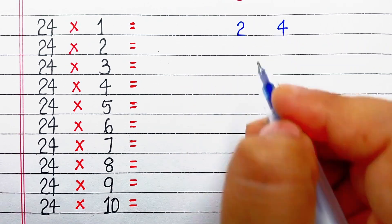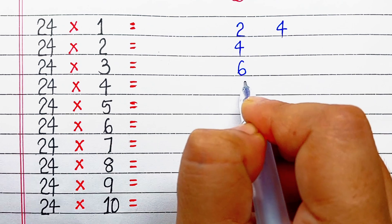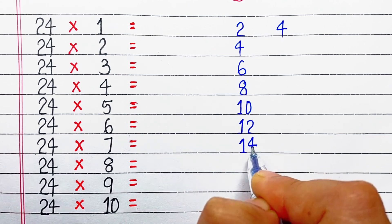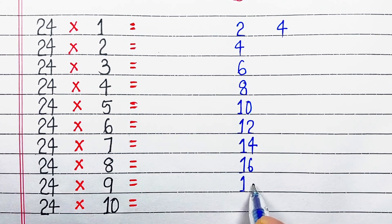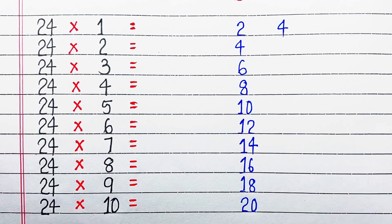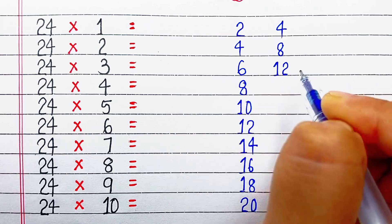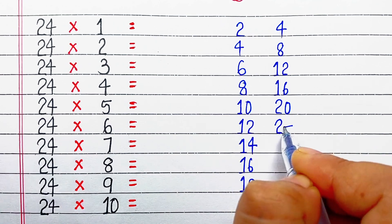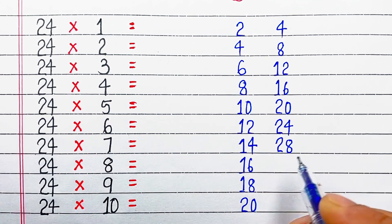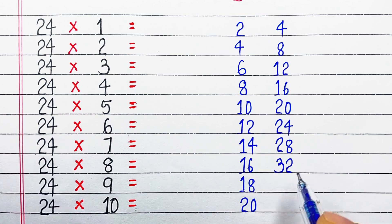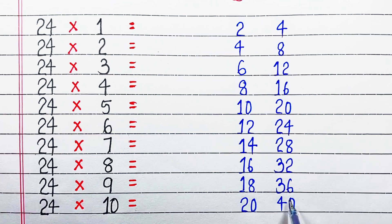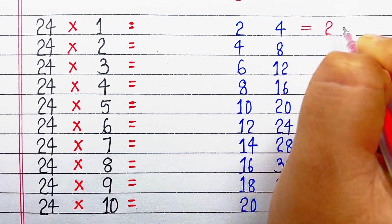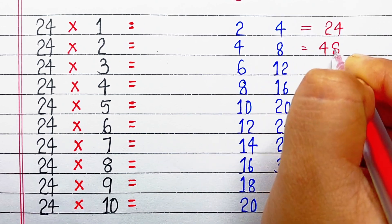To the left hand side we will write the table of 2 as we had done previously. To the right hand side we will write the table of 4. If you want to learn an easy trick to remember multiplication tables from 2 to 5, the link of the video is in the description box as well as on the I button. So here: 4 ones are 4, 4 twos are 8, 4 threes are 12, 4 fours are 16, 4 fives are 20, 4 sixes are 24, 4 sevens are 28, 4 eights are 32, 4 nines are 36, 4 tens are 40. Now combining: 2 and 4 makes 24, 4 and 8 makes 48.